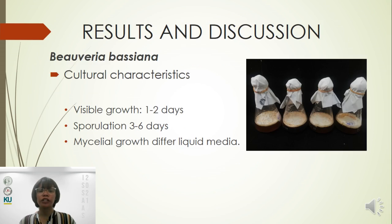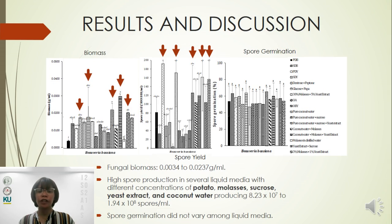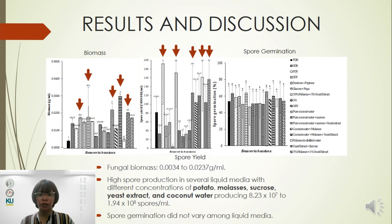For the results and discussions, in Bovera Baciana, we observed visible growth 1 to 2 days and spore production 3 to 6 days after inoculation. We observed differences in thickness, degree of spore production, and color change, such as a pink tinge on mycelia after spore production. Collected biomass ranged from 0.034 to 0.0237 grams per ml. Spore yield was high on liquid media with different concentrations of potato, molasses, sucrose, cheese extract, and coconut water, which produced 8.23 × 10⁷ to 1.94 × 10⁸ spores per ml. Spore germination did not vary among liquid media.